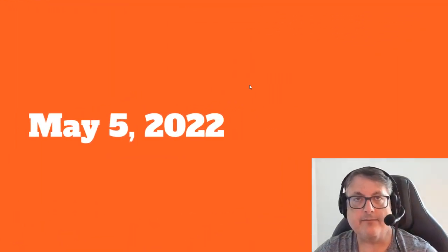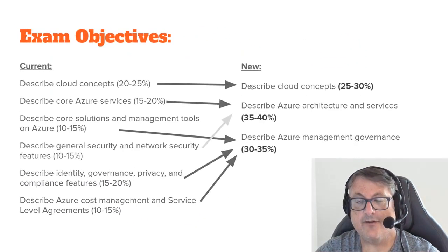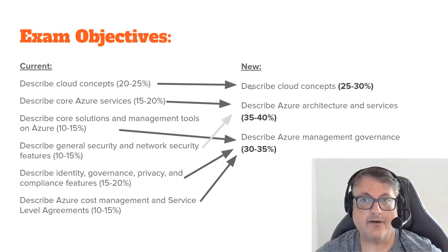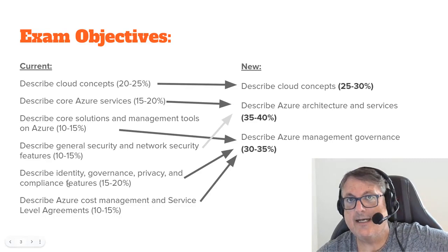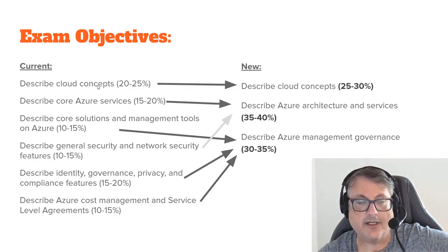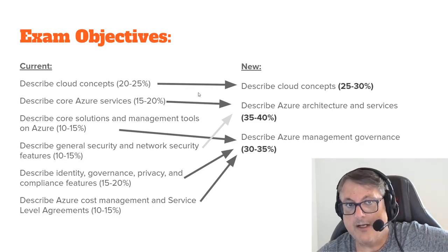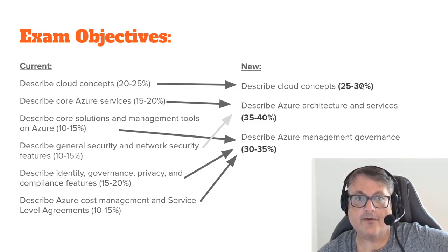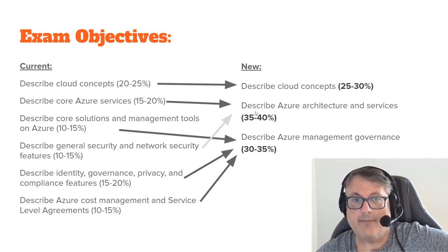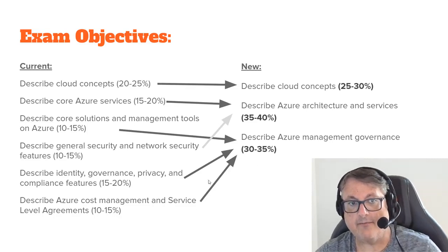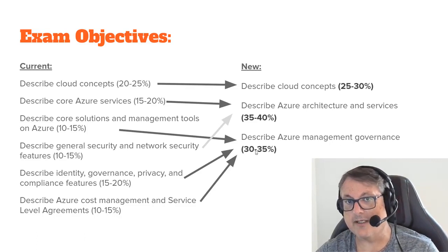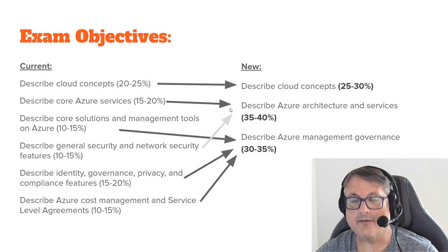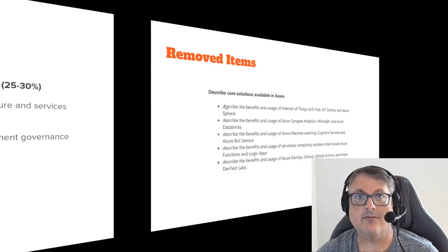The changes go into effect May 5. If you take it on May 4, you'll get the old version; if you take it on May 5, you'll get the new version. What Microsoft has done is reduce from six major objectives down to only three. They've moved 'describe cloud concepts' from 20% up to 25-30%. Core Azure services has been bumped up from 35% to 40%, and some of the other objectives have been melded into Azure management and governance at 30-35%.